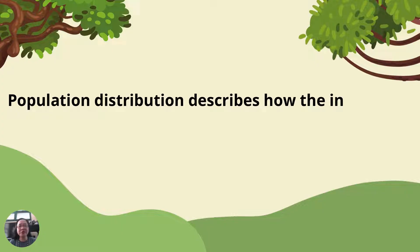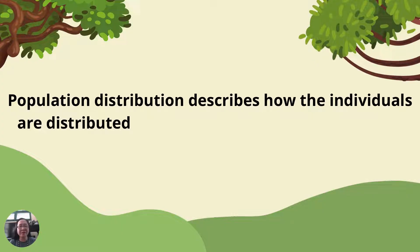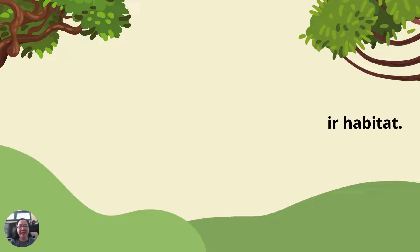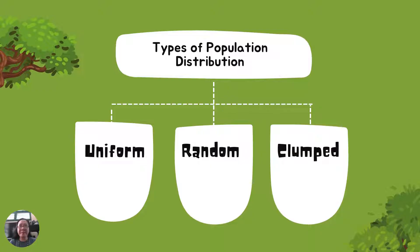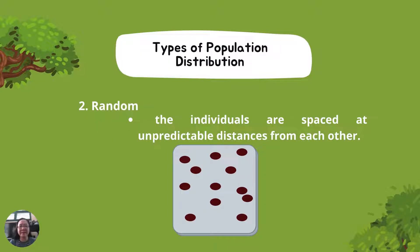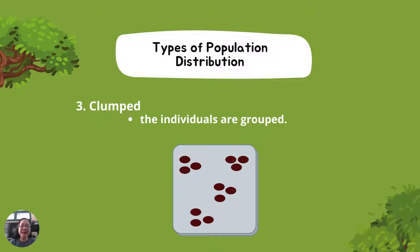Population distribution describes how individuals are distributed or spread throughout their habitat. There are three types of population distribution: Uniform, Random, and Clumped. In Uniform distribution, individuals are equally spaced apart. In Random distribution, individuals are spaced at unpredictable distances from each other. In Clumped distribution, individuals are grouped together.